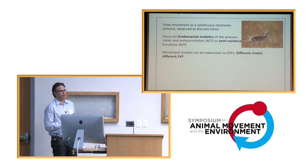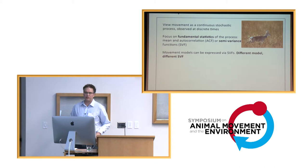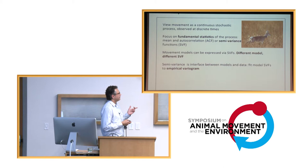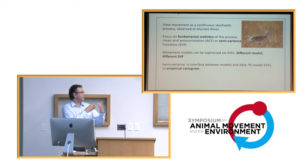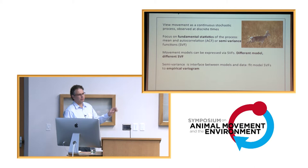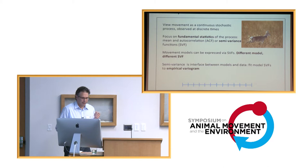The next step is to express these movement models, continuous space, continuous time, stochastic process models, in terms of their semivariance functions. So a different model implies a different semivariance function. You can then calculate the empirical semivariance function using variogram techniques from geostatistics, and then use semivariance as a sort of interface between the model for which you have a theoretical semivariance function and the data for which you calculate this empirical variogram.